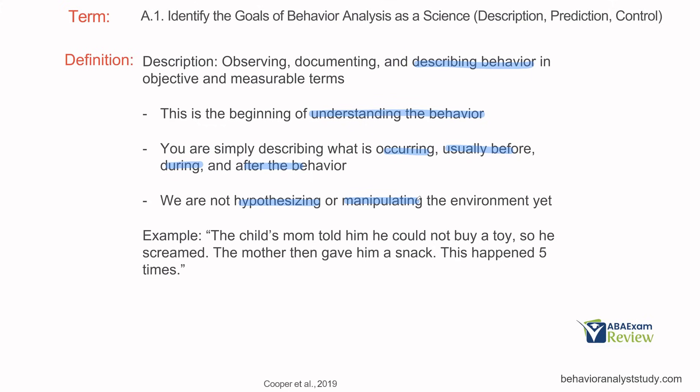Just a description of what the behavior looks like, maybe what happened before, what happened after. For example, the child's mom told him he could not buy a toy, so he screamed. The mother then gave him a snack. This happened five times. We're not describing a function in that example. We're not saying why it happened, and we're not manipulating anything. It's exactly what occurred. The child's mom said no toy, child screamed, mother gave snack. Happened five times. We've yet to hypothesize, and we've yet to manipulate anything.